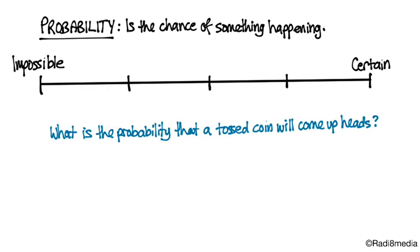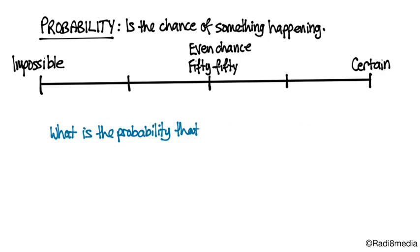What about the probability that if I toss a coin, it will come up heads? Well, there's only two options, head or tails. So we'd say that's a 50-50 chance, or another word we could use is an even chance. And you'll see we've placed that right in the middle of our scale of probability.